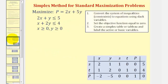So here's our standard maximization problem. We have the objective function we're trying to maximize and we have our constraints. Notice how the last two just confirm that x and y are non-negative. We won't be using these to perform the simplex method.